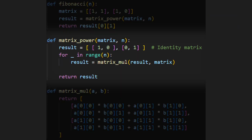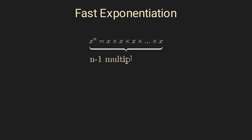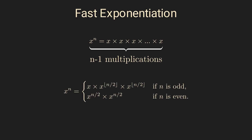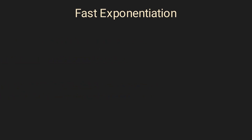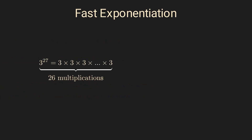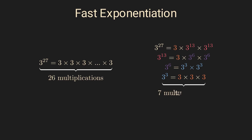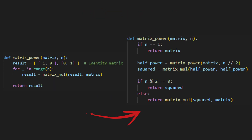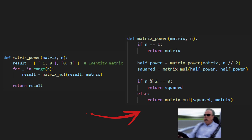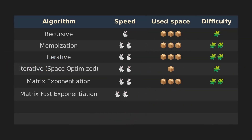The bottleneck of the previous algorithm is the exponentiation step. Luckily, we can speed things up with something called fast exponentiation. Instead of multiplying n minus 1 times in a row, we split the problem in half again and again. For example, instead of multiplying 27 threes together, we can compute 3 to the 27th power as 3 times 3 to the 13th power times 3 to the 13th power. By halving the exponent like this, we cut down the number of steps dramatically. In fact, with this method, the number of multiplications drops from 26 all the way down to just 7. And the best part is, this trick works the same way with matrices. That's why matrix exponentiation with fast exponentiation is the fastest method so far.